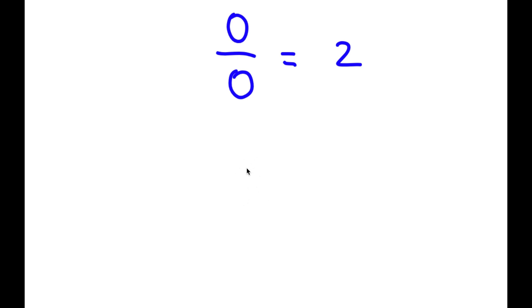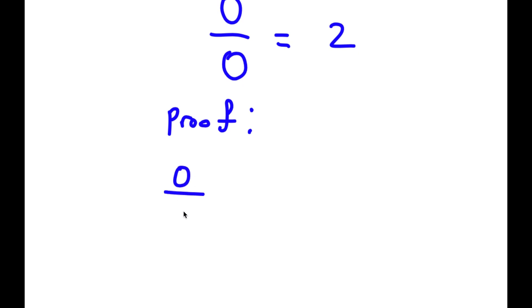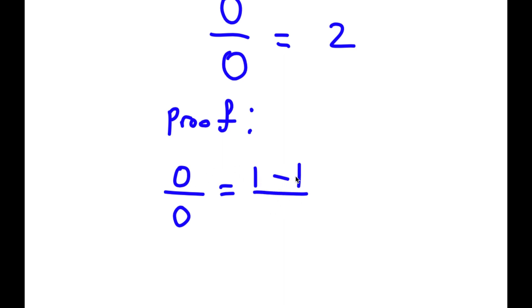So in this video, I'm going to be proving that zero divided by zero is equal to two. For my proof, I first start with zero over zero. This is the same thing as one minus one, because zero is the same thing as one minus one. So I have one minus one over one minus one, which is zero over zero.